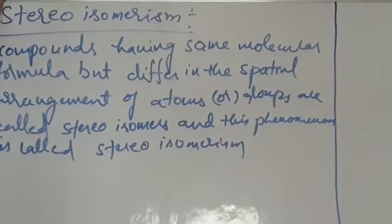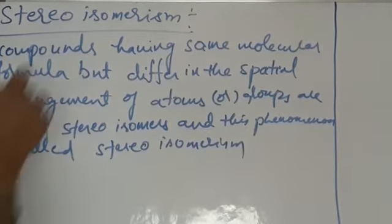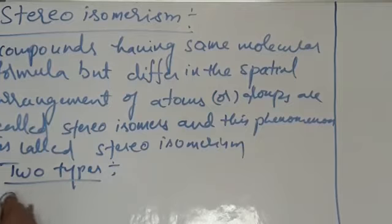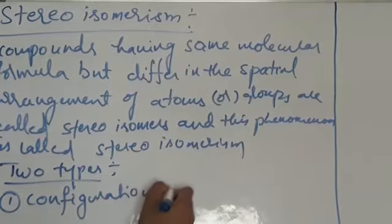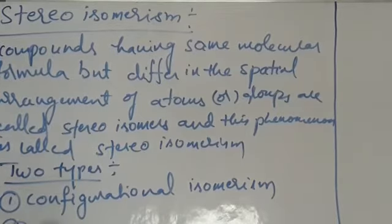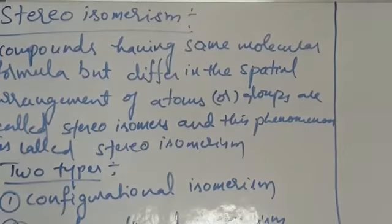Stereoisomerism is again of two types: configurational isomerism and conformational isomerism. These are the two types of stereoisomerism.